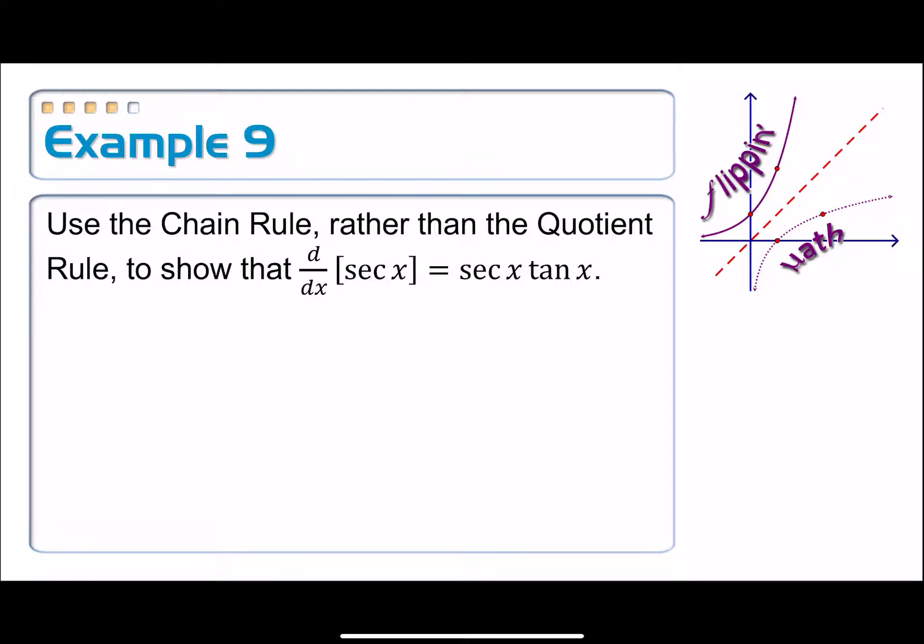Example 9. Use the chain rule rather than the quotient rule to show that the derivative with respect to x of secant x is equal to secant tangent.